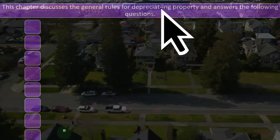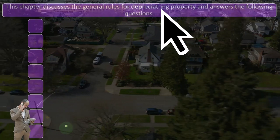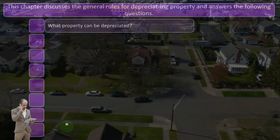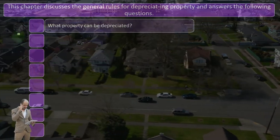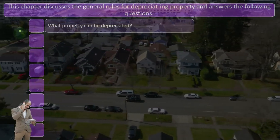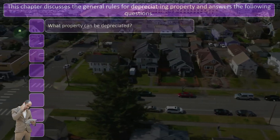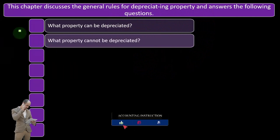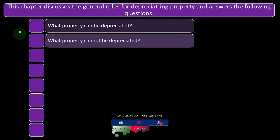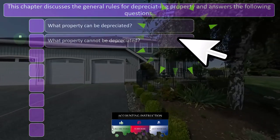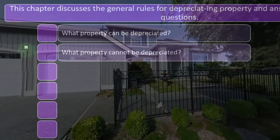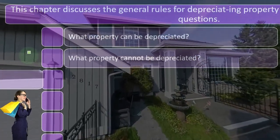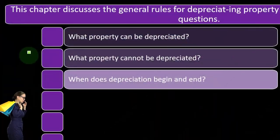This chapter discusses the general rules for depreciating property and answers the following questions: What property can be depreciated — or rephrased, what property do I have to put on the books as an asset and depreciate, as opposed to expensing at the point of purchase? What property cannot be depreciated, or what property don't I have to depreciate but can possibly expense at the point of purchase as a normal business expense?